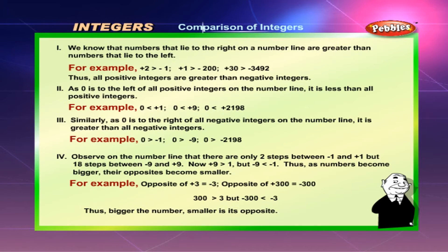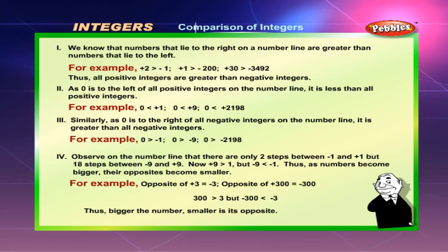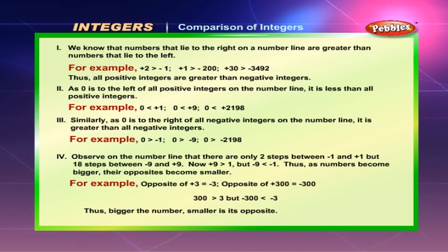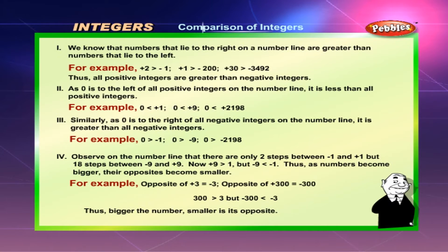Similarly, as 0 is to the right of all negative integers on the number line, it is greater than all negative integers — for example, 0 is greater than minus 1, minus 9, and minus 2198. Observe on the number line that there are only two steps between minus 1 and plus 1, but 18 steps between minus 9 and plus 9. Plus 9 is greater than plus 1, but minus 9 is lesser than minus 1.